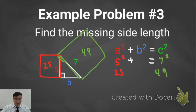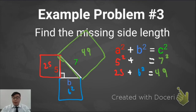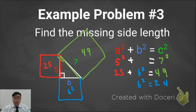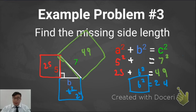Now I'm going to find the missing side length — the length of side B. B squared is the area of that square. The Pythagorean Theorem says A squared plus B squared should add up to 49. So 25 plus how much more brings me to 49? The area of B squared is going to be 24, since 25 plus 24 equals 49. But I don't want the area — I want the side length. So the square root of 24, and I'll leave my answer as exact: the square root of 24.